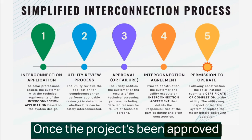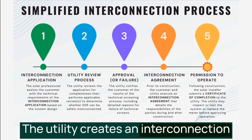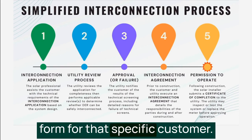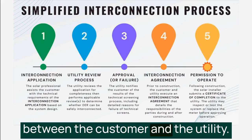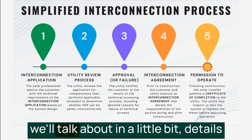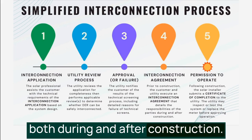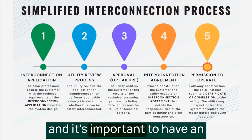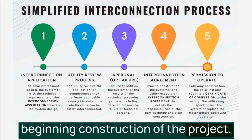Once the project has been approved by the utility, it's step four. The utility creates an interconnection agreement from a boilerplate form for that specific customer, and that becomes the contract between the customer and the utility. The interconnection agreement details the responsibilities of the parties both during and after construction. This happens prior to construction, and it's important to have an interconnection agreement before beginning construction of the project.